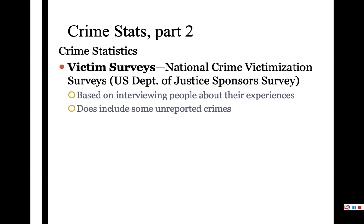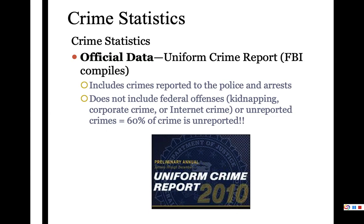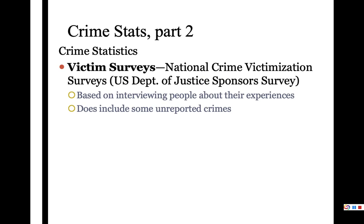I would challenge you to consider which crimes are least likely to be reported — I'm pretty sure you can guess what some of those would be, and they make up a pretty significant amount. So again, two sources of crime statistics: the Uniform Crime Report, which covers reported crimes excluding those federal offenses, and crime victimization surveys — an anonymous survey administered by the U.S. Department of Justice — which gets at that significant 60% of crime that is not reported.